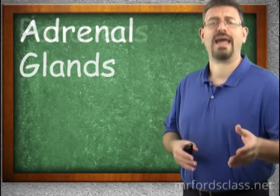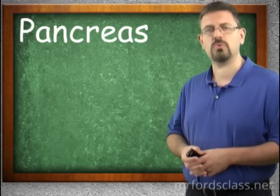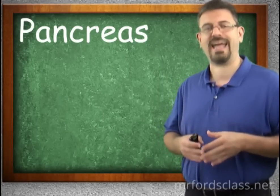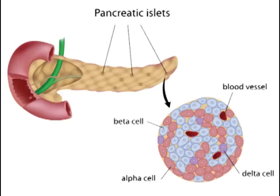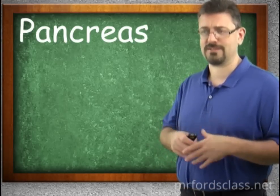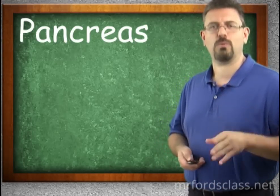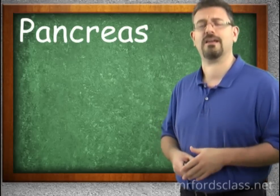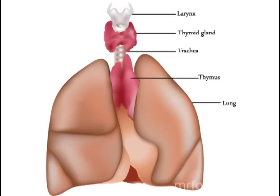Behind the stomach, we have the pancreas. The pancreas is a cool organ in that it has both an exocrine and an endocrine function. The endocrine function we're interested in is located within the islets of Langerhans, which is made of four different types of cells: alpha cells, which make glucagon; beta cells, which make insulin; delta cells, which make somatostatin; and PP cells. We'll look at alpha, beta, and delta cells and their products in later videos.